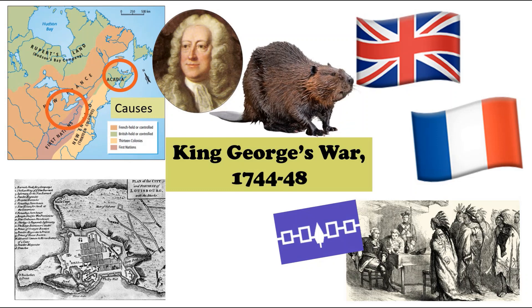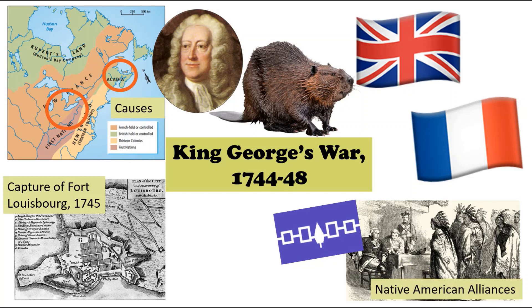Both countries want to own and control this land in order to profit from the fur trade. Britain doesn't do particularly well initially, but a major victory is the capture of Fort Louisbourg, which costs many lives from both British soldiers and the colonists. The British and French are both negotiating with Native Americans, and in 1747 the Iroquois — a notable Native American tribe — agree to join the British effort against the French. However, a peace treaty is signed before they can really shift the balance.